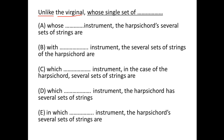Option A says 'harpsichord several sets of strings,' so I'm comparing an instrument to the number of strings — that's not parallel. Option B also says 'several sets of strings'; I cannot compare strings to an instrument, so B is also not parallel.